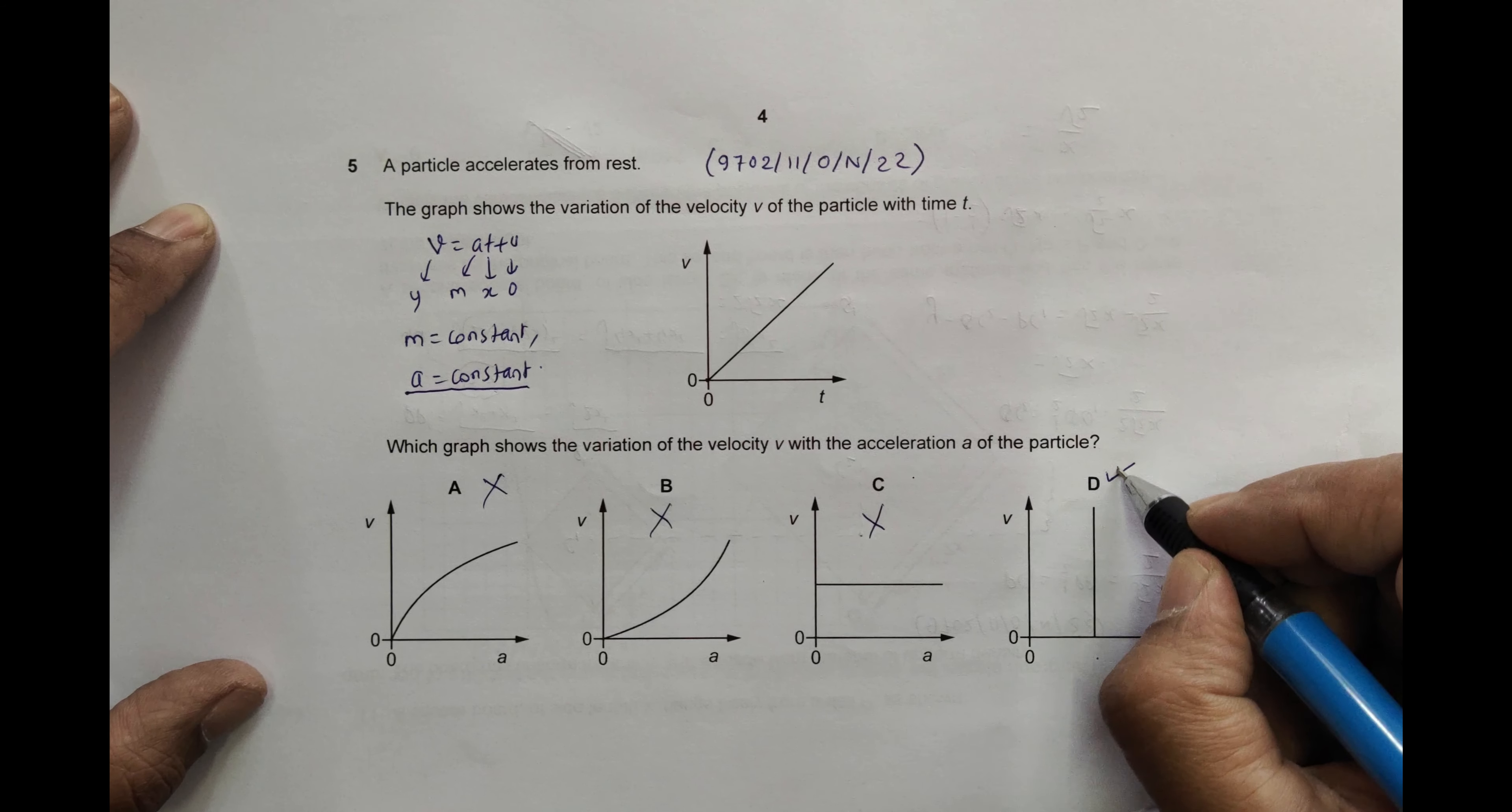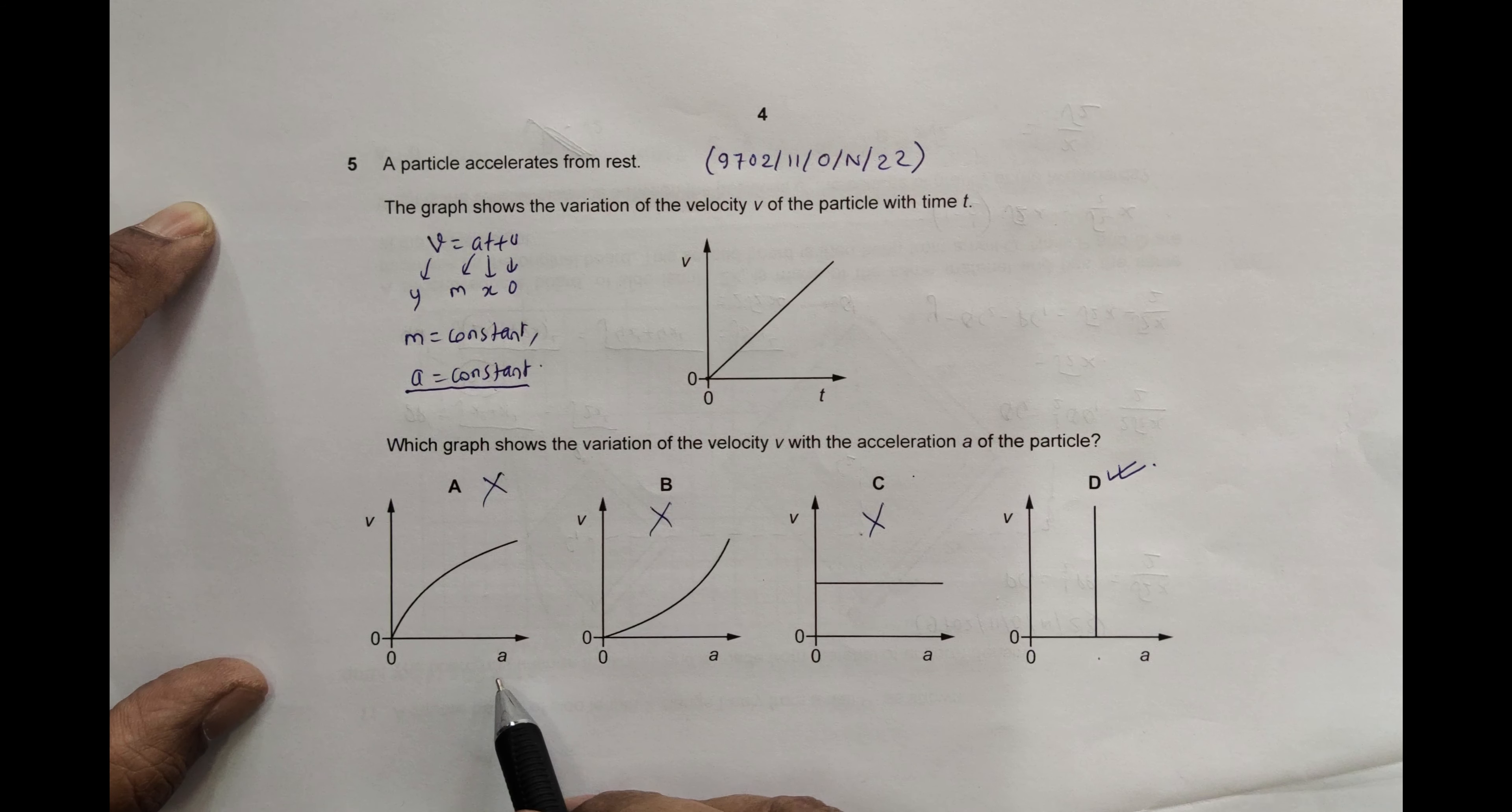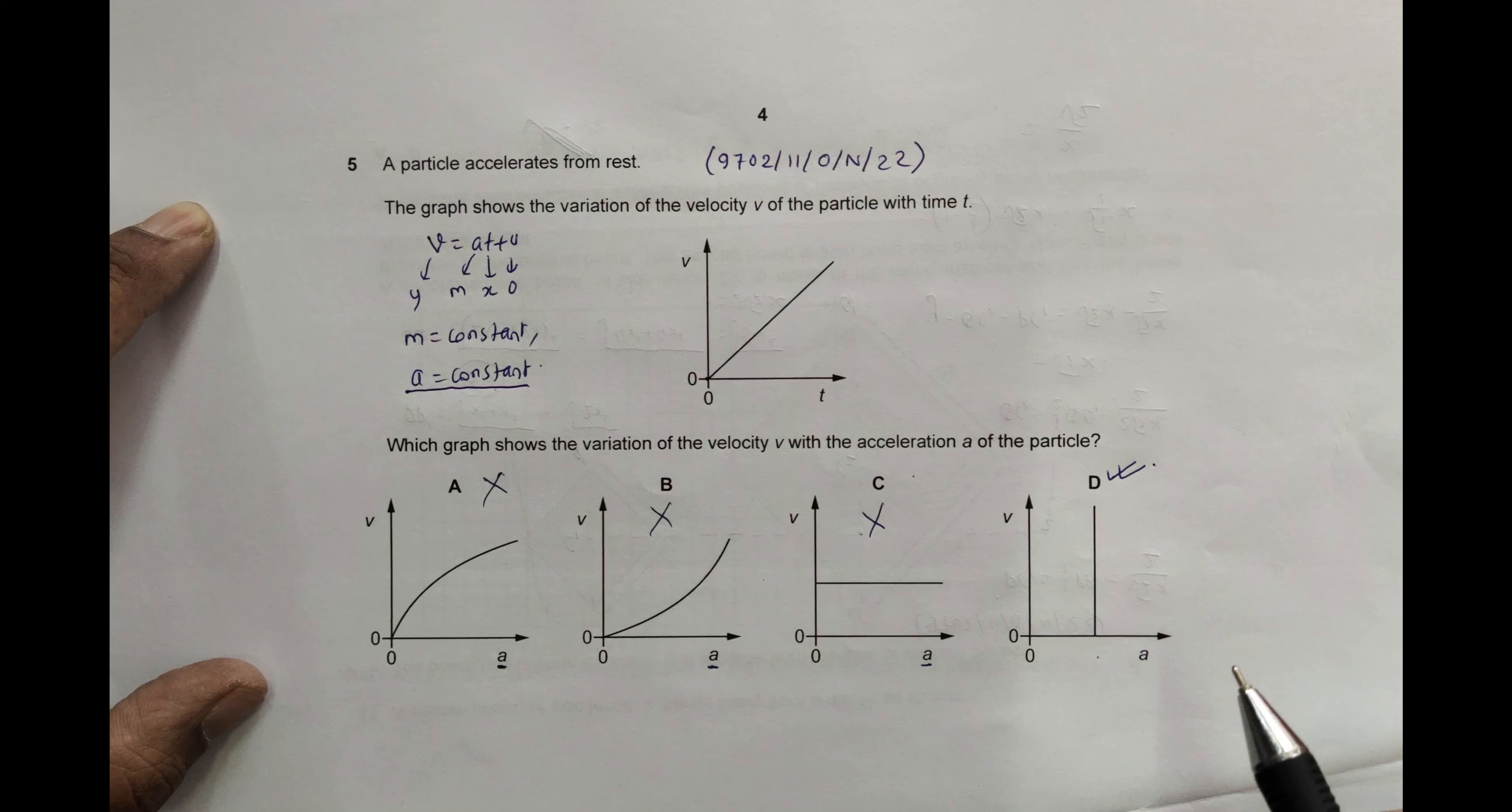Now the main difficulty with this question is that people often think it is a V-T graph itself. Here we have to take care that the graph is for V-a, not V-T. And so the answer becomes very simple because here a remains constant and only V varies. So D is the correct choice.